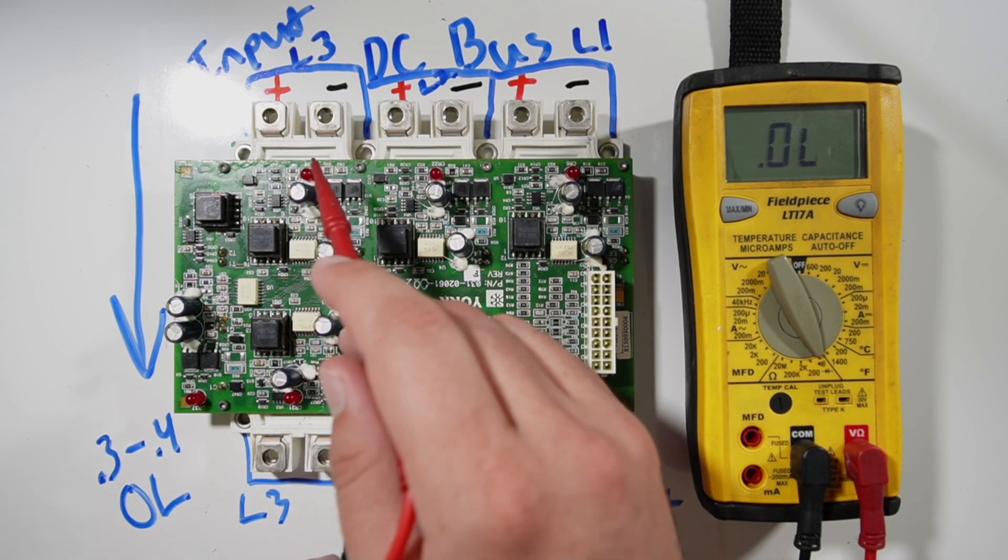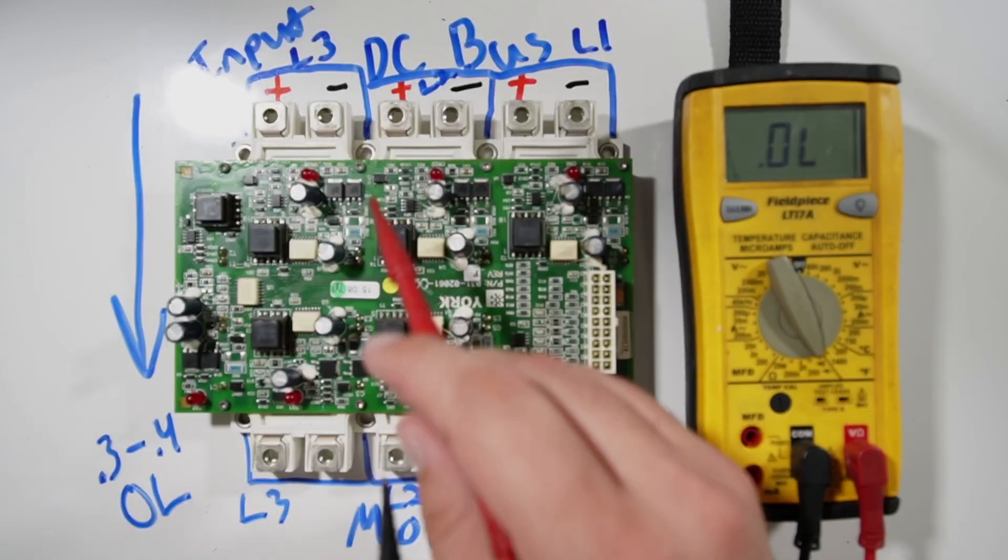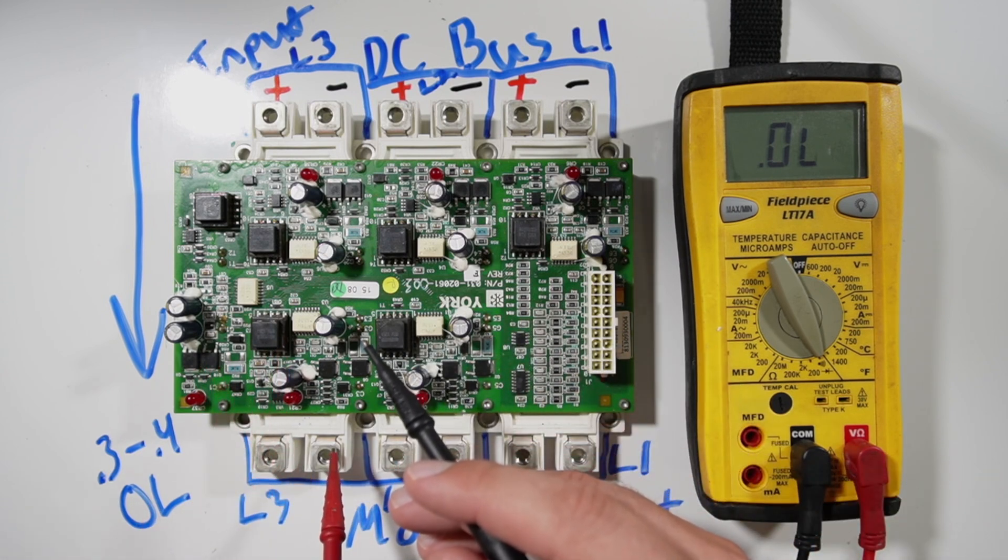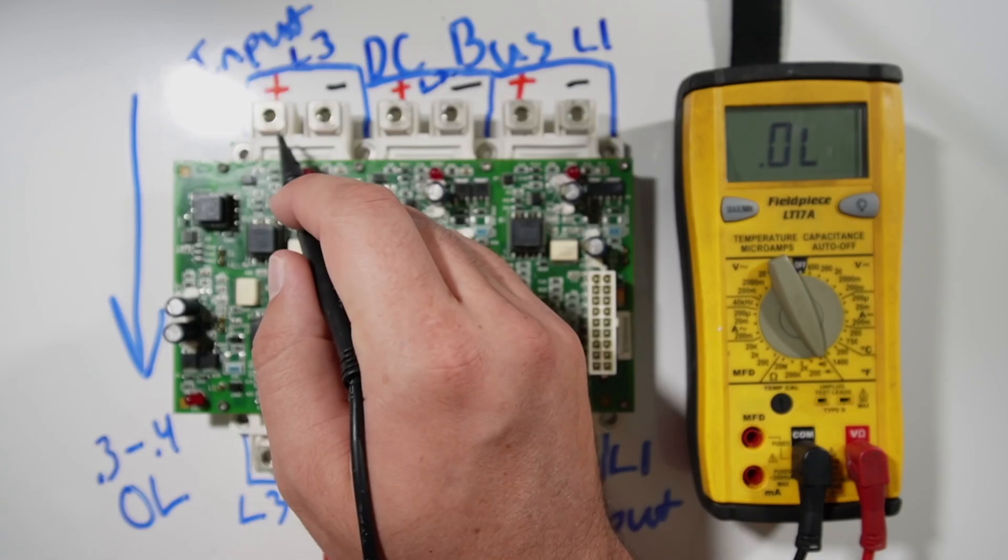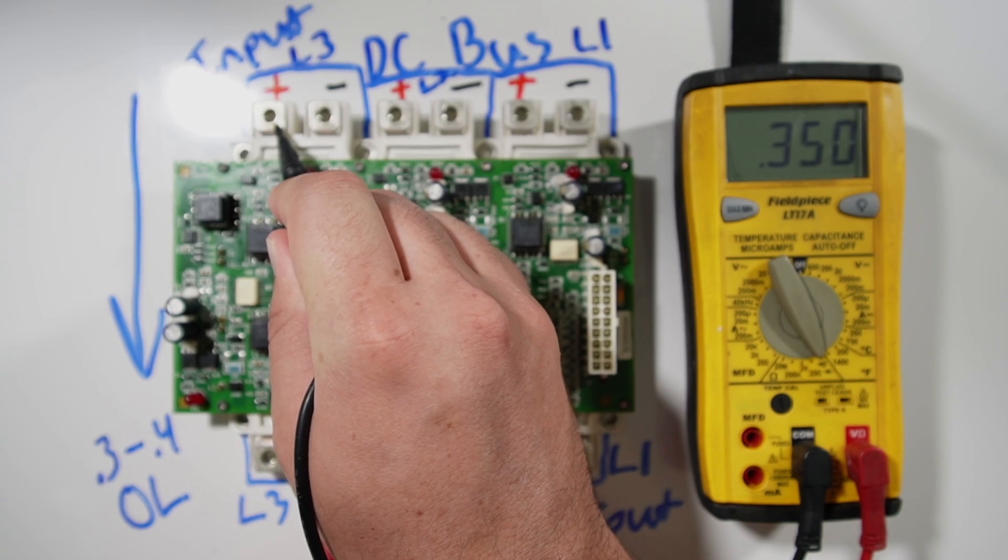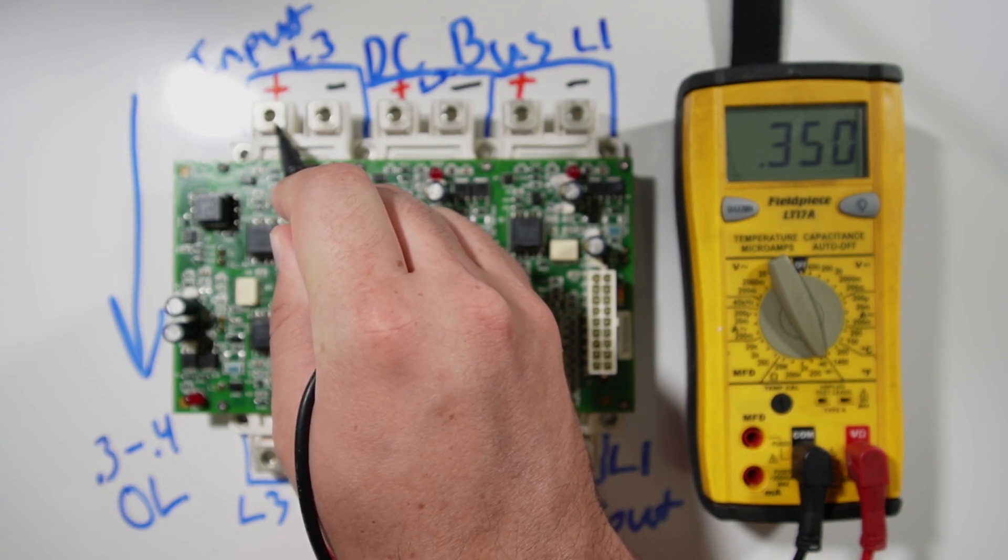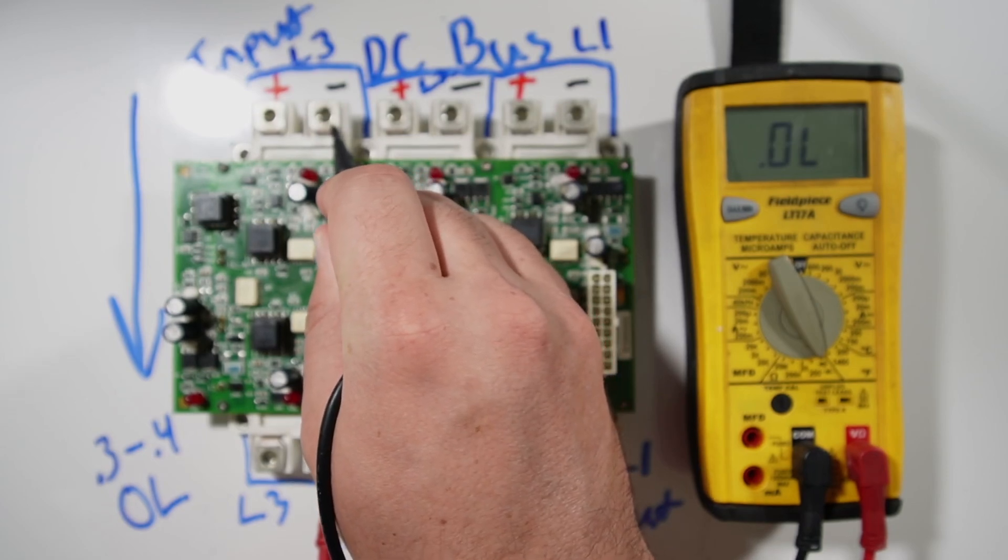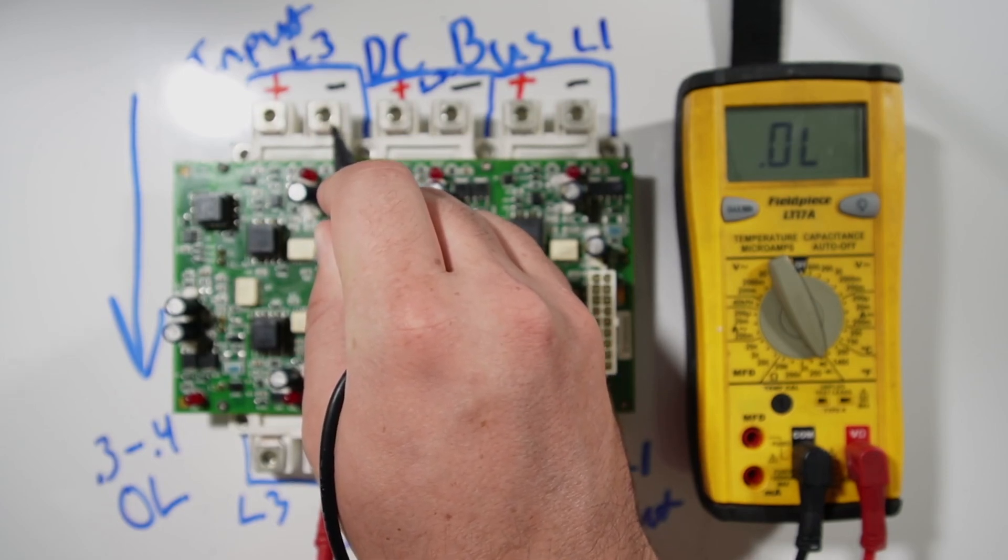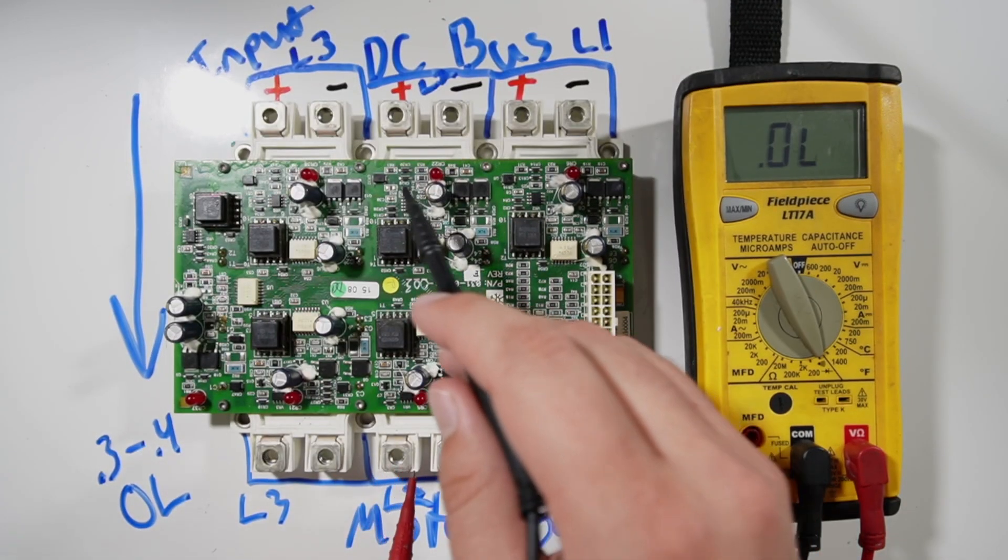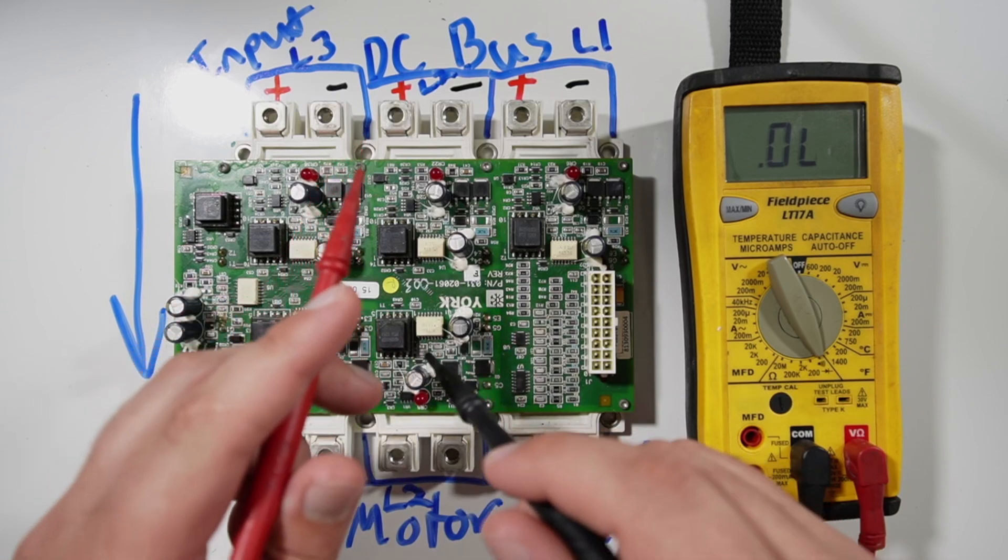Depending on your preference, you can either move over and test the next one, or I like to finish a full gate at a time. To do that, we now need to reverse our leads. Our red lead will then go on the output side. We'll use our black lead. Earlier this was OL. Now we have a reading of 0.35 on the positive. And our negative terminal gives us OL. That's a good test. That is exactly what I want to see for this gate. And we're going to do that same exact process on all three of these.